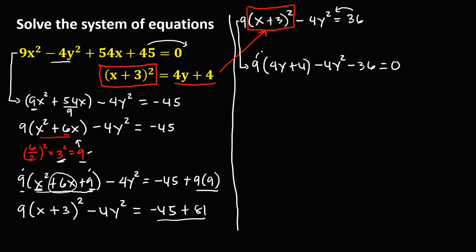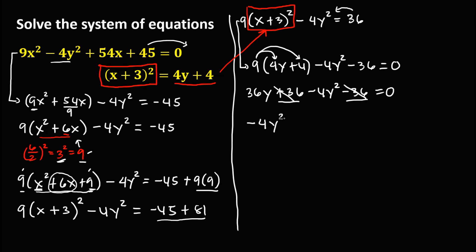Simplifying: multiply 9 times 4y to get 36y, and 9 times 4 gives positive 36. So we have 36y plus 36 minus 4y squared minus 36 equals 0. Combining like terms, positive 36 and negative 36 cancel to 0, leaving us with negative 4y squared plus 36y equals 0.